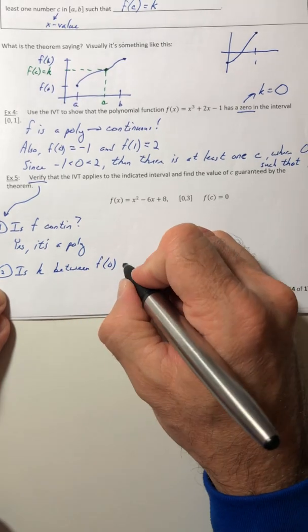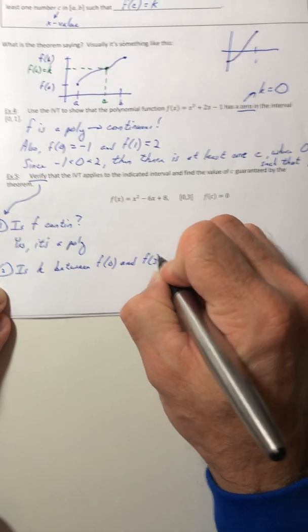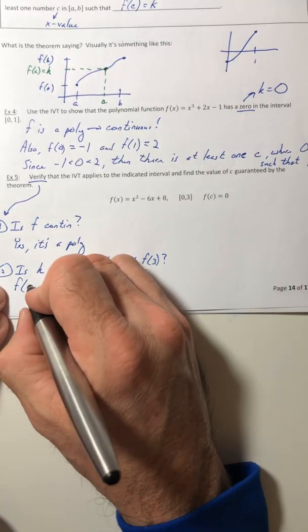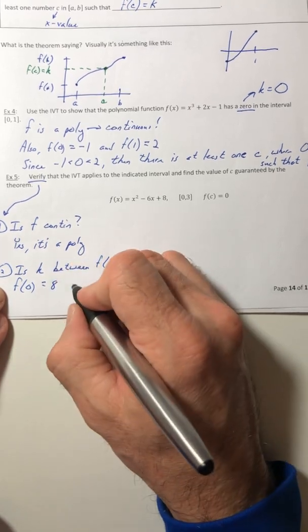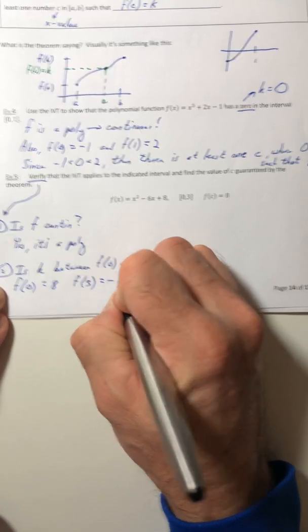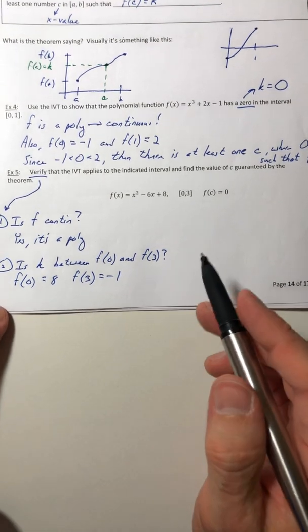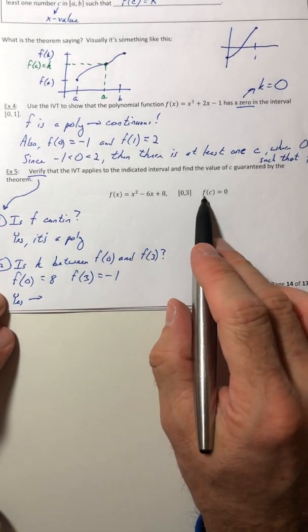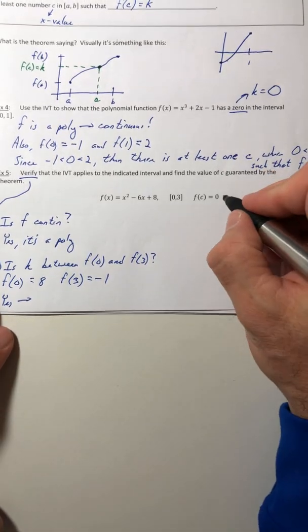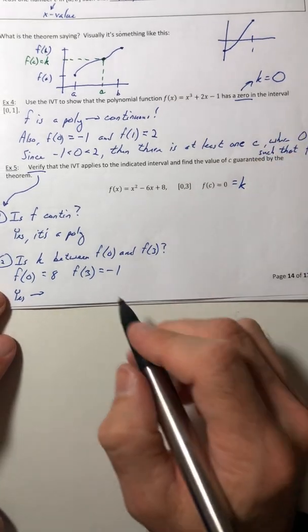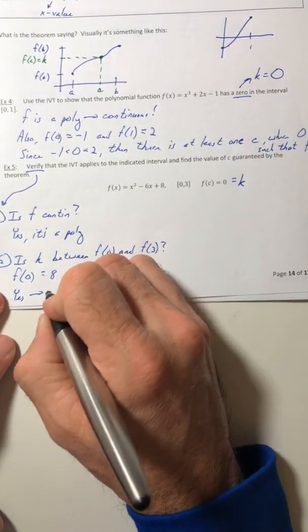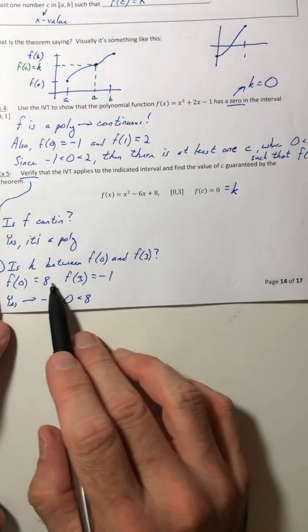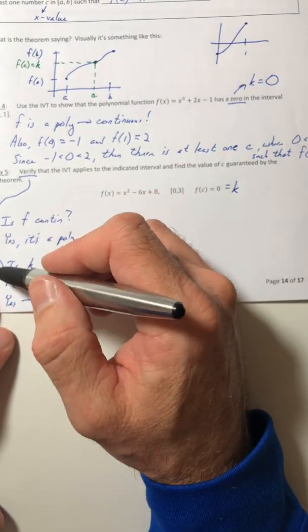So in our case, f(0) and f(3). Well, the only way to know that is to figure out what they are. So f(0) is equal to eight. f(3) is equal to negative one. So yes. Because in our case, it says f(c) is equal to zero. Well, that's your k value. So negative one is usually less than zero, which is usually less than eight. So yeah, the k value is in between those two things. So that's how you show that it verifies.